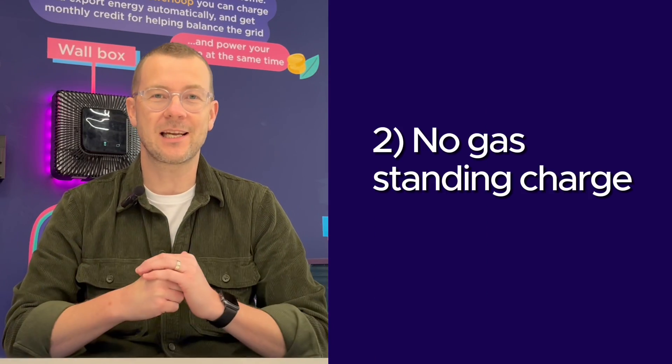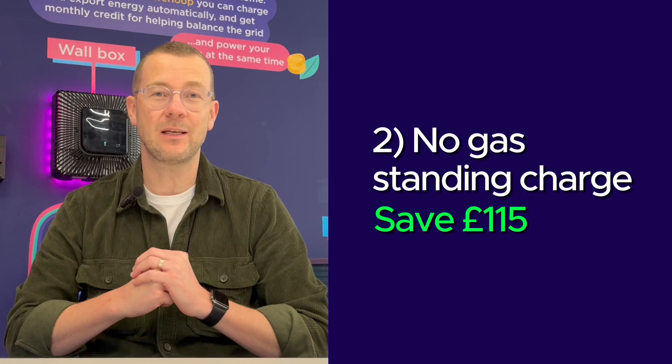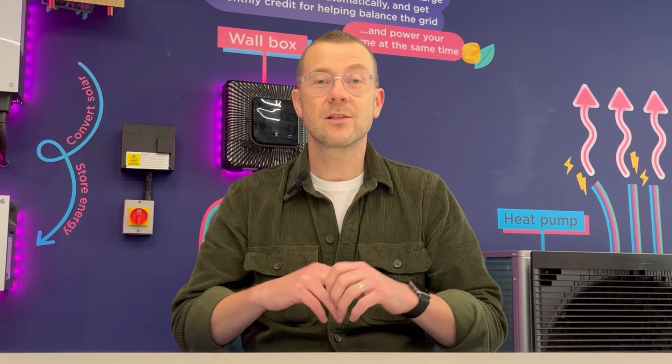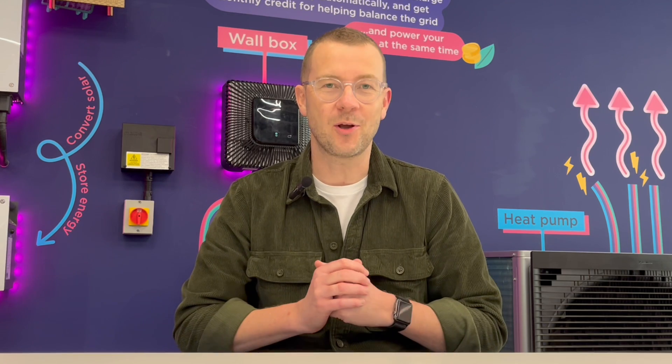If you use your heat pump to rid your home of gas completely, you'll no longer have to pay a standing charge which can save you £115 a year. And the good news is we can cap and remove your gas meter completely free of charge. Most gas boilers will last 10 to 15 years on average, whereas a heat pump can last around 20 years. So chances are you'd need to replace a boiler far sooner than a heat pump.